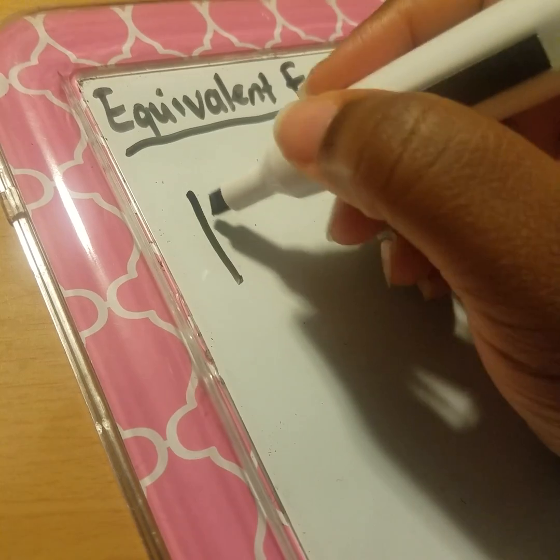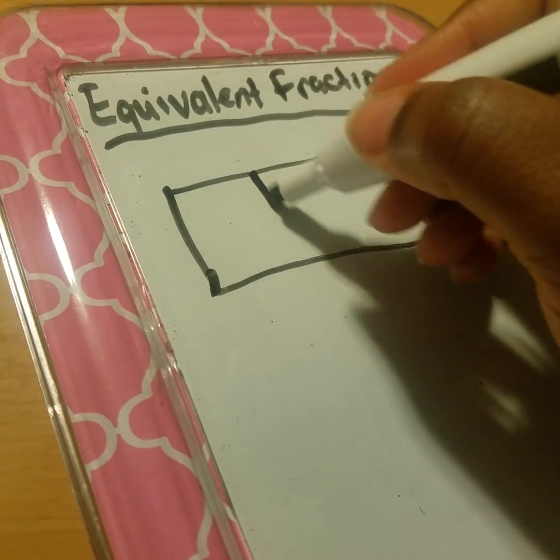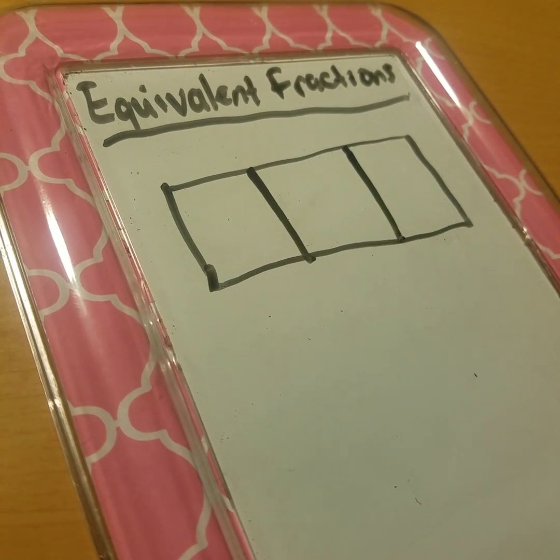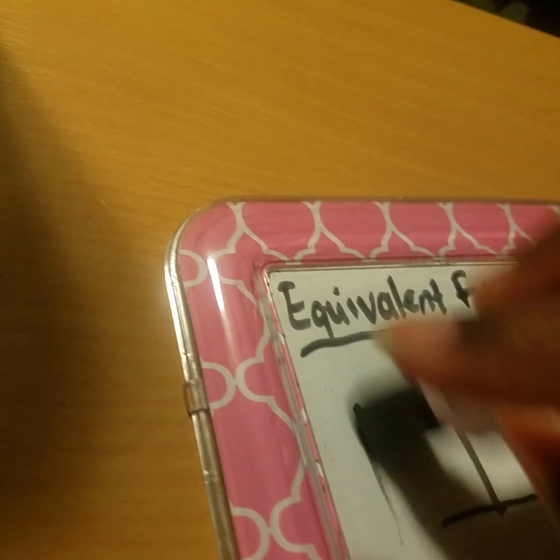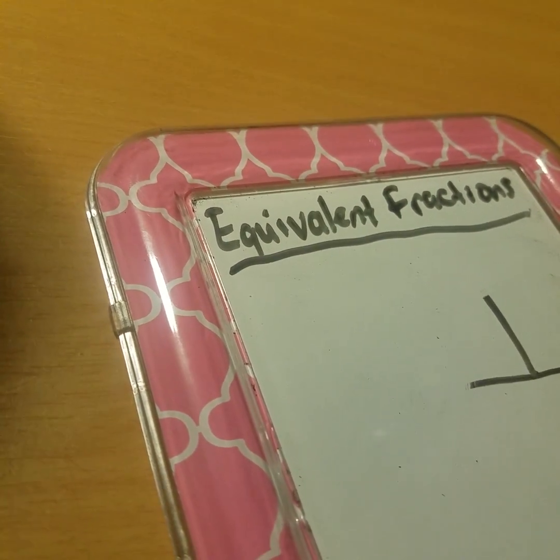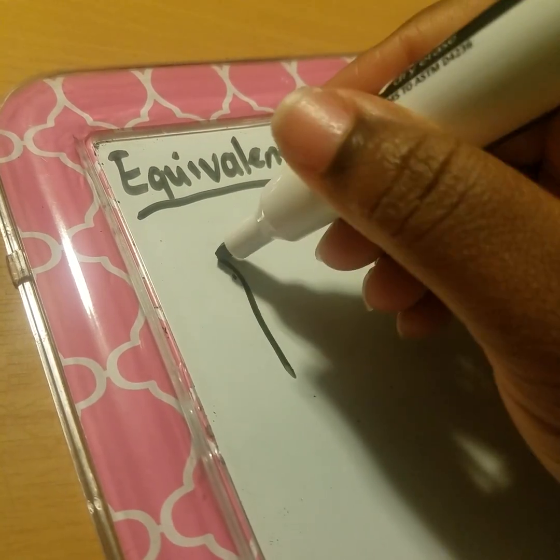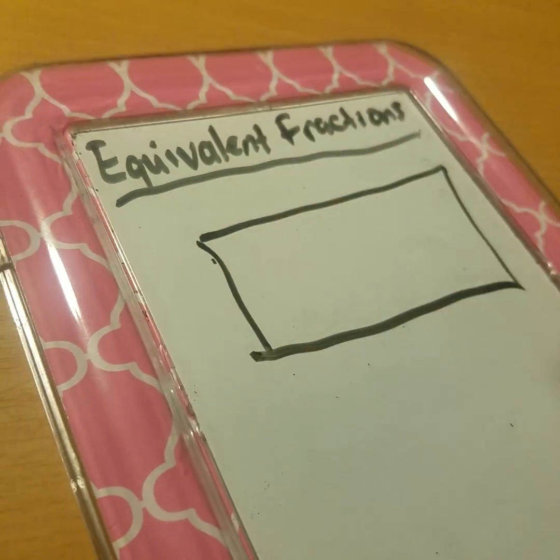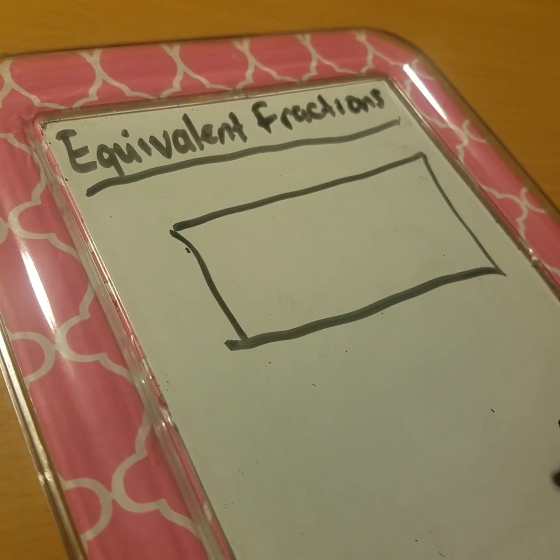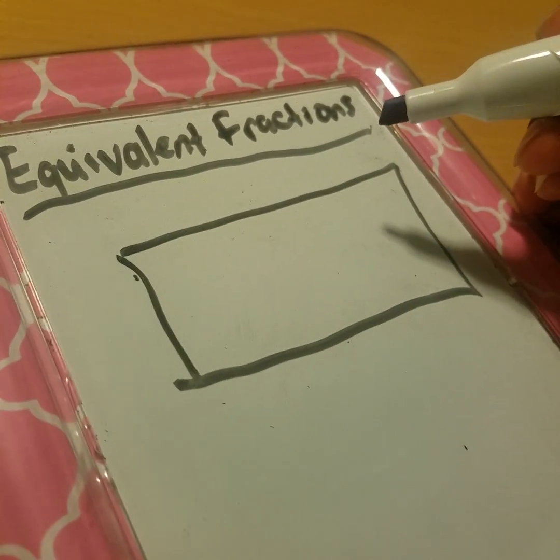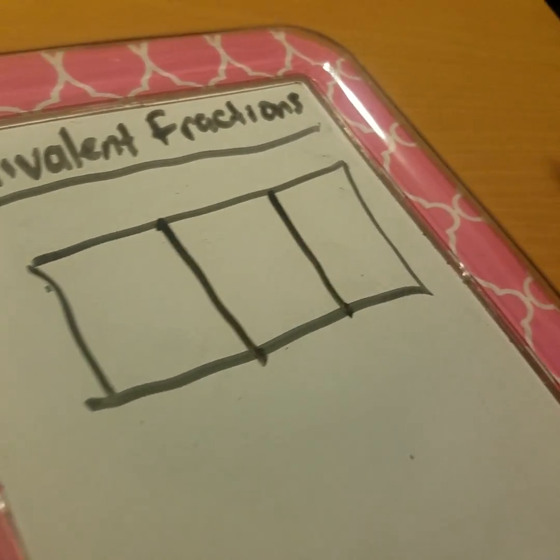A few of you were familiar with it but some struggled with the visual representation part. Let's say we're representing two-thirds using a tape diagram. When representing a fraction, we always start with the whole, and our denominator represents what our whole is broken up into. So if I'm trying to represent two-thirds, I take my whole and cut it into three pieces or thirds.